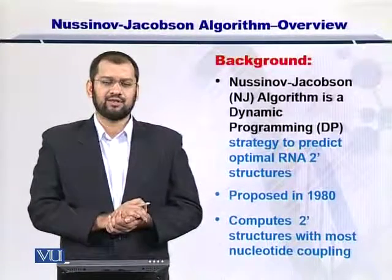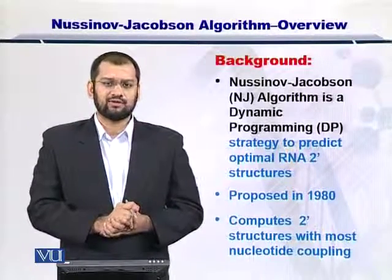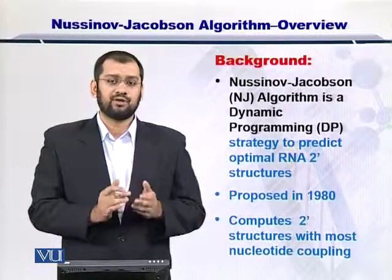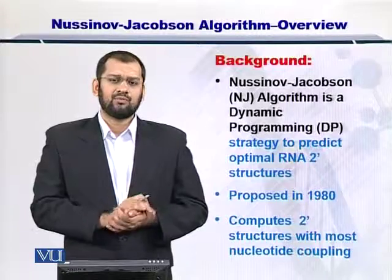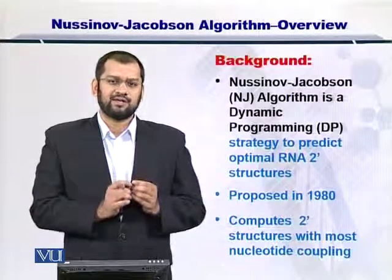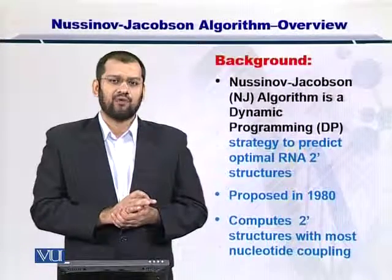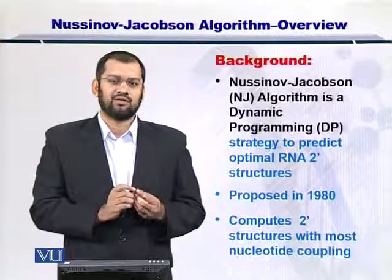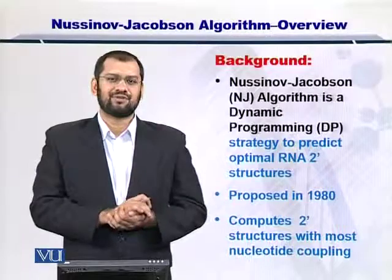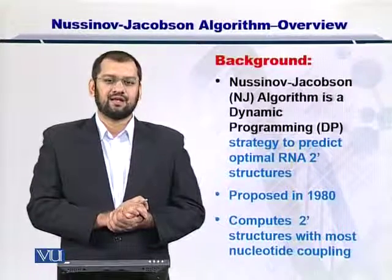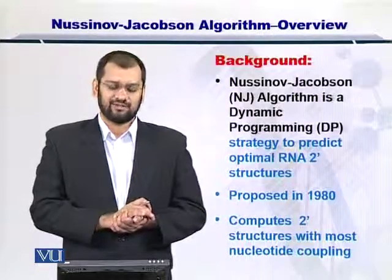The Jacobson-Nusinov or NJ algorithm is used to predict secondary structures in RNAs. The algorithm was proposed in 1980 and it computes the secondary structures with the highest number of nucleotide couplings. NJ can actually help us to factor in the energies as well as we'll see later.